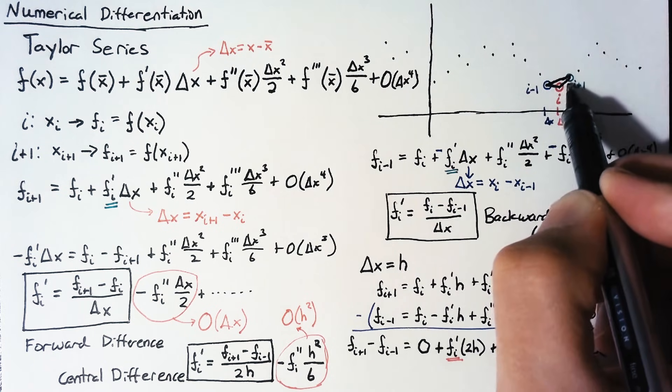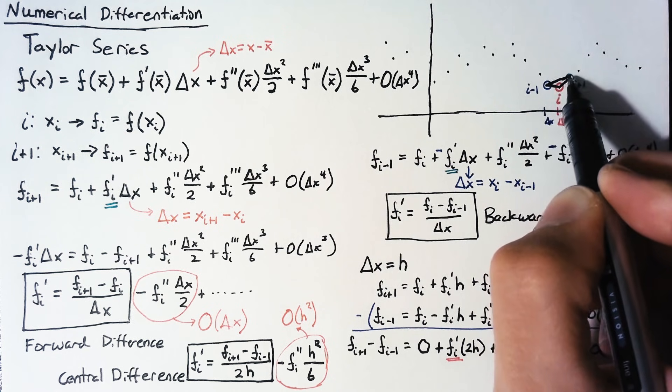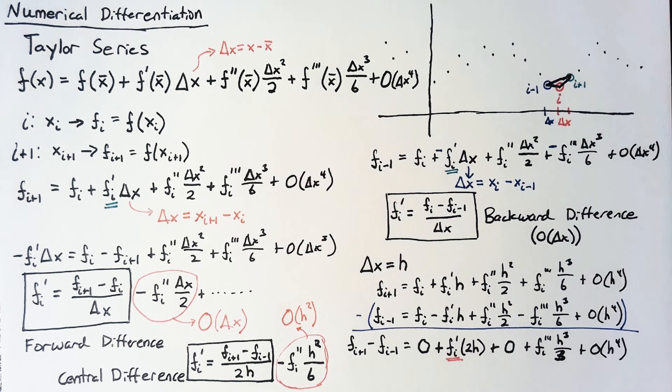And what this ends up looking like is we're just taking the shortcut between these two points in order to calculate the derivative. This line here is our forward difference. This is our backward difference. And the shortcut here is our central difference, which actually turns out to be the average between the two of them. So, I hope this video was informative and I hope it's useful as you venture forth in your tasks with numerical methods.